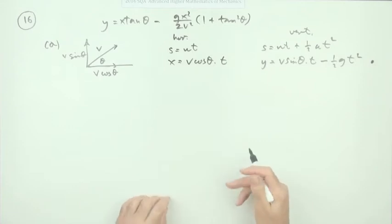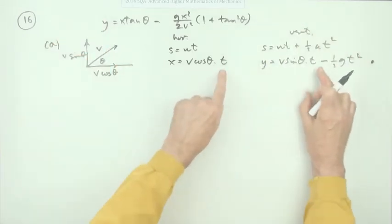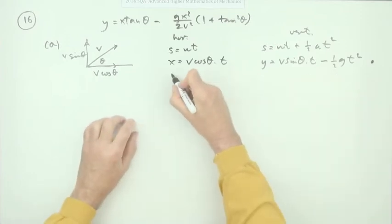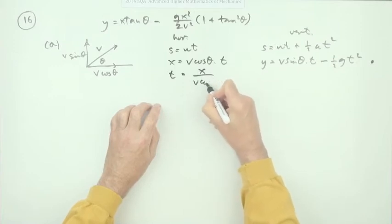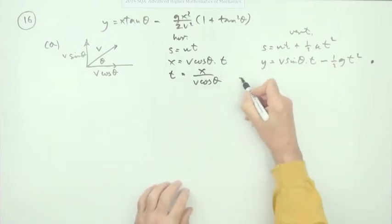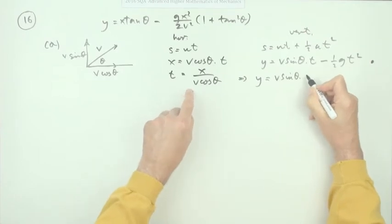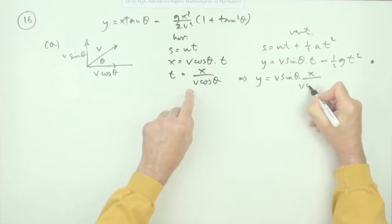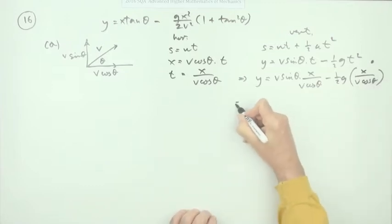To get this equation I need to tie them together. I can use t for substitution. If you rearrange, t equals x over V cos theta. If you put it into this one, you'll have V sine theta times x over V cos theta minus a half g times x over V cos theta squared.